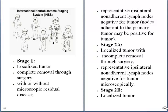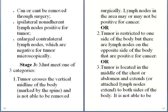In stage 2b, we have a localized tumor that can or cannot be removed through surgery. Here, the ipsilateral non-adherent lymph nodes are positive for the tumor, while the contralateral lymph nodes are enlarged but negative for the tumor microscopically.